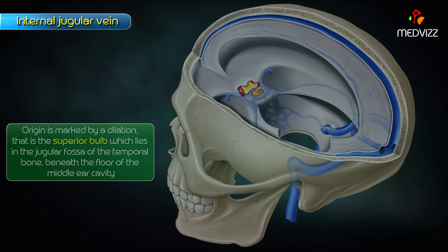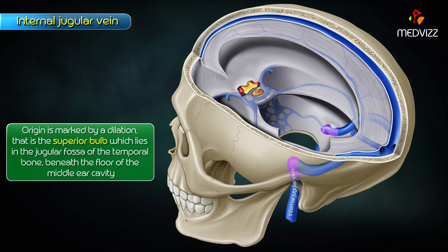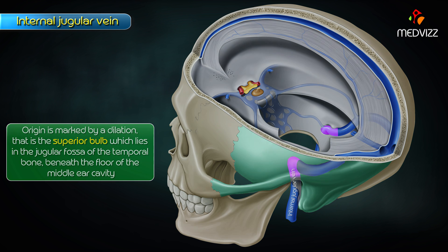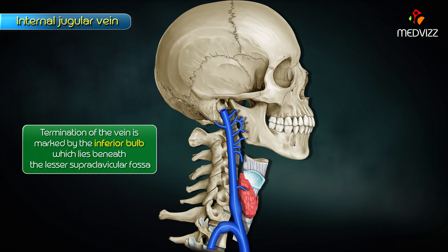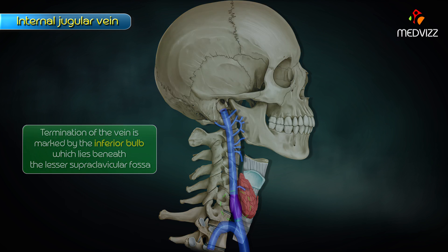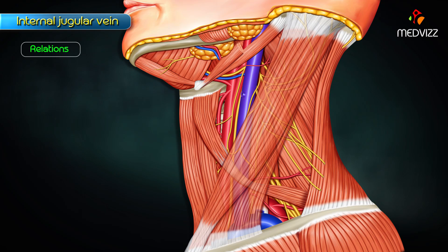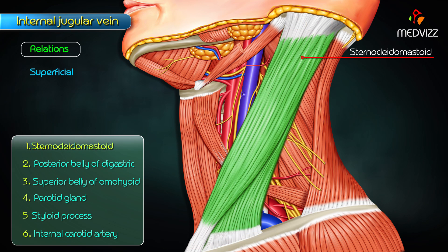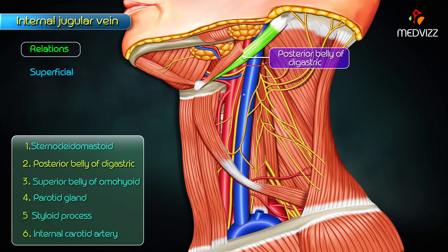The origin is marked by a dilation called the superior bulb, which lies in the jugular fossa of the temporal bone beneath the floor of the middle ear cavity. The termination of the vein is marked by the inferior bulb, which lies beneath the lesser supraclavicular fossa.